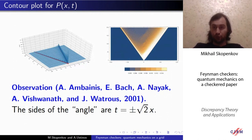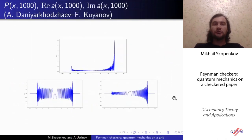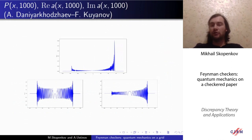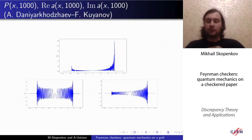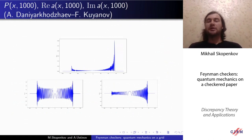Let us also illustrate this phenomenon on the next plot, where we draw the probability and the real and imaginary parts of our vectors for some large fixed time t equals 1000, as a function of x. We see that this probability has a sharp peak exactly on the boundary of this angle. Right after the peak, the probability falls to very small values — still positive, as there are checker paths — but very small. The probability becomes exactly zero only when x becomes greater than t, that is, greater than 1000.